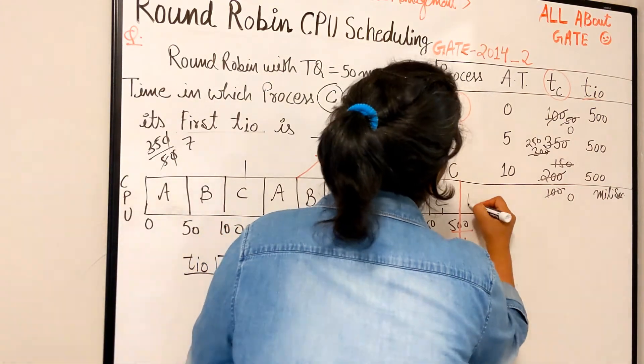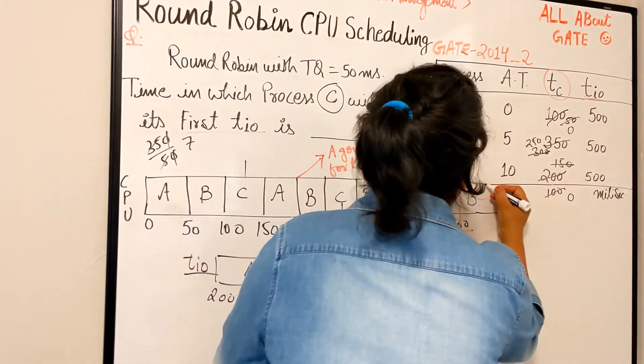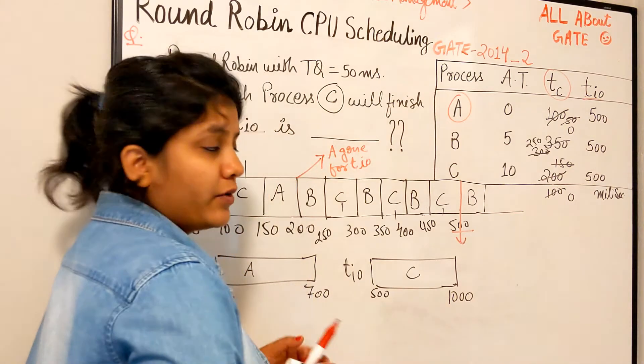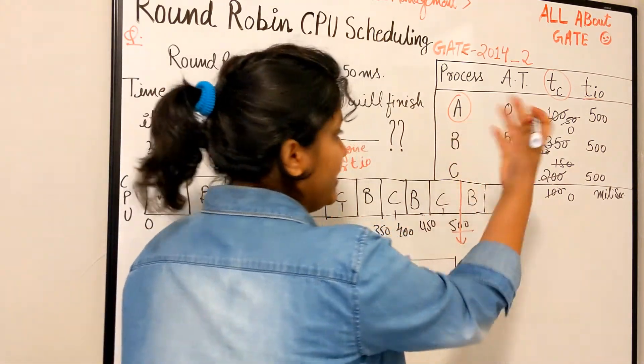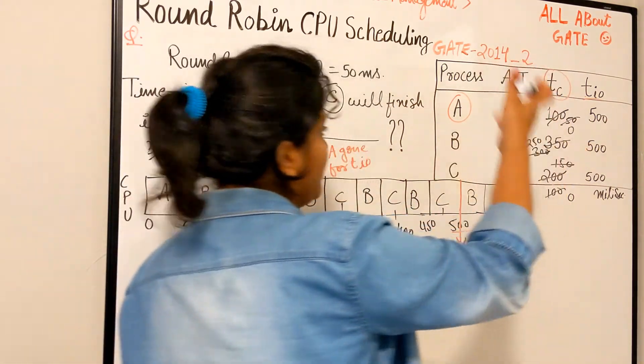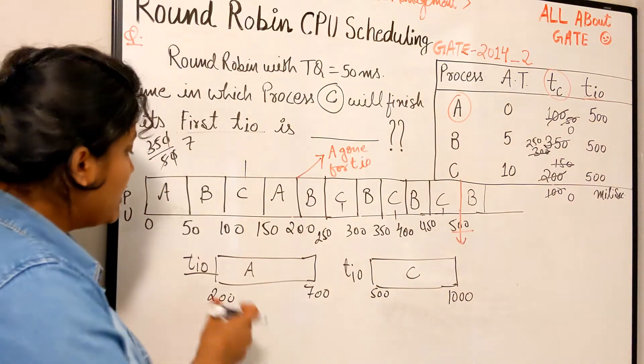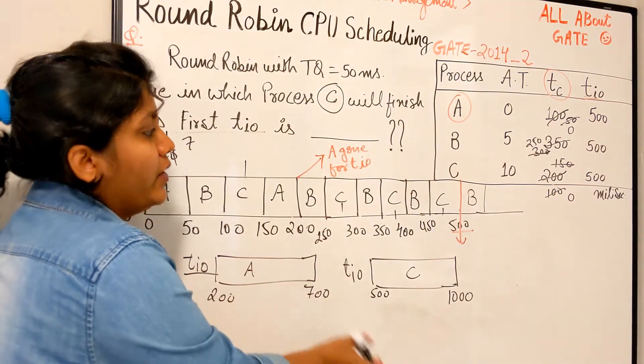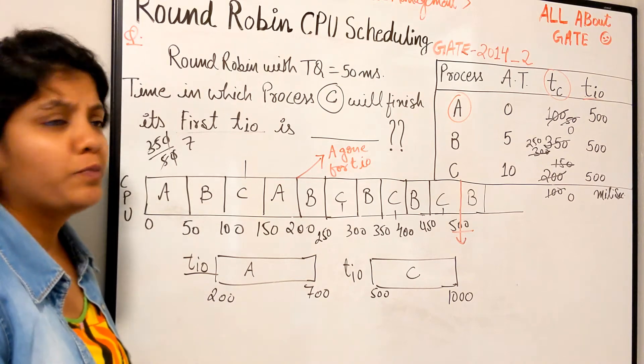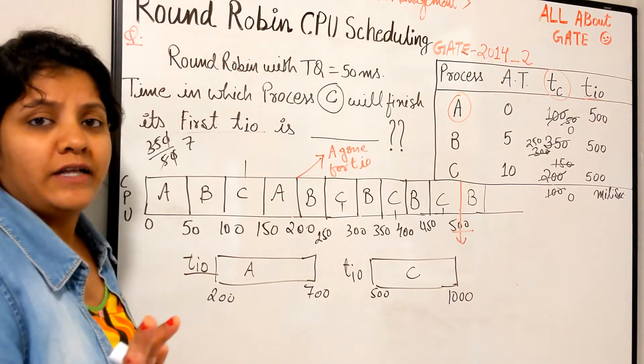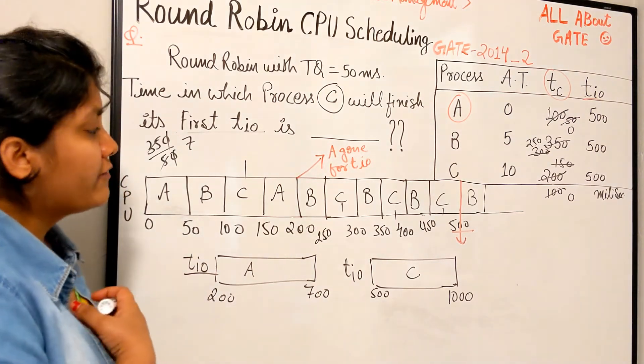So at what time it finishes? It finishes at 1000. By this time, don't get confused, by this time B will be still continuing, right? B will be continuing. Okay, whatever slices it needs, it will consume, and then it will also go for TIO. And once A finishes its TIO, it will come back and perform the next iteration of the loop.